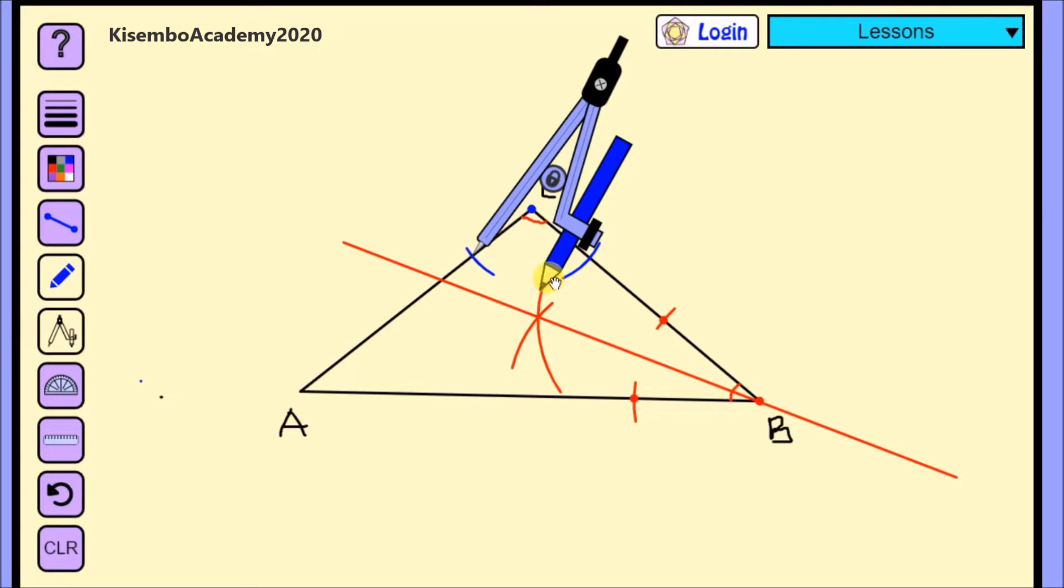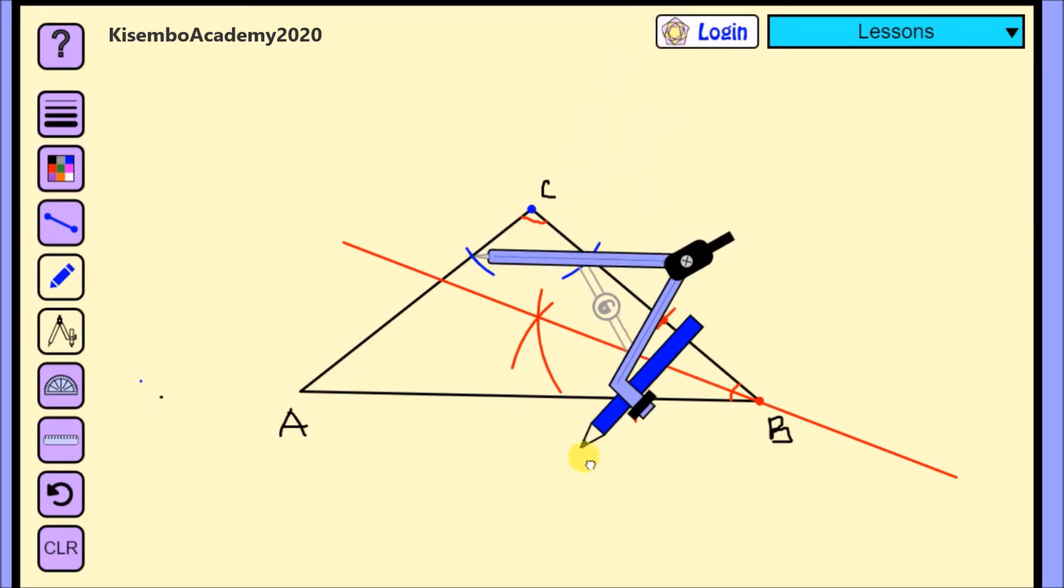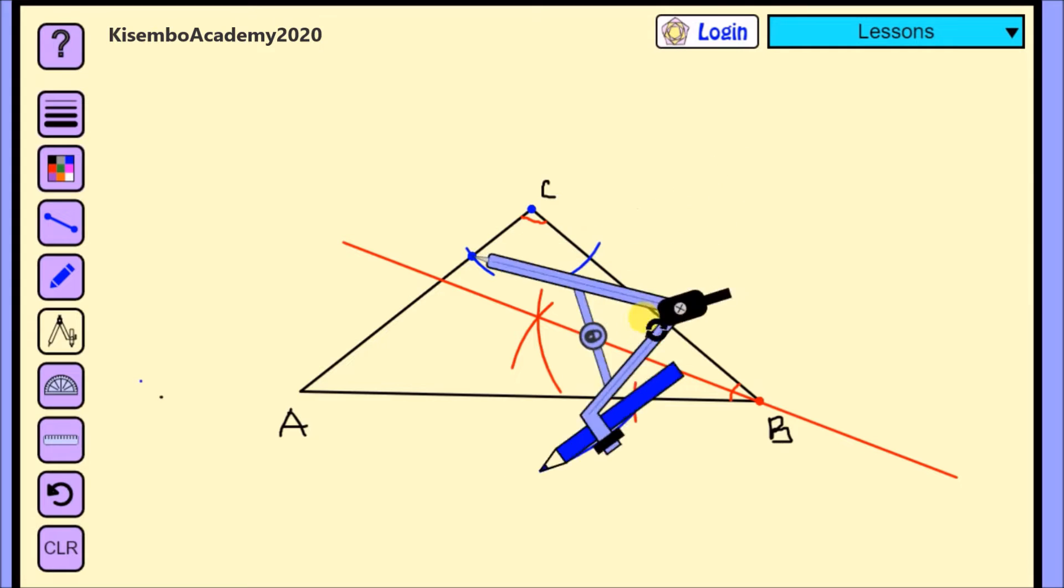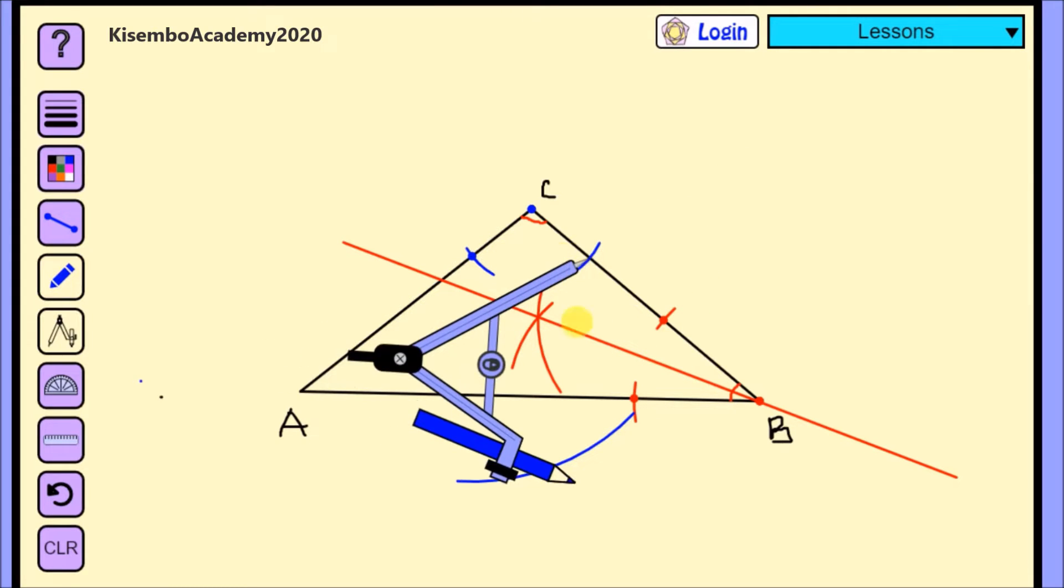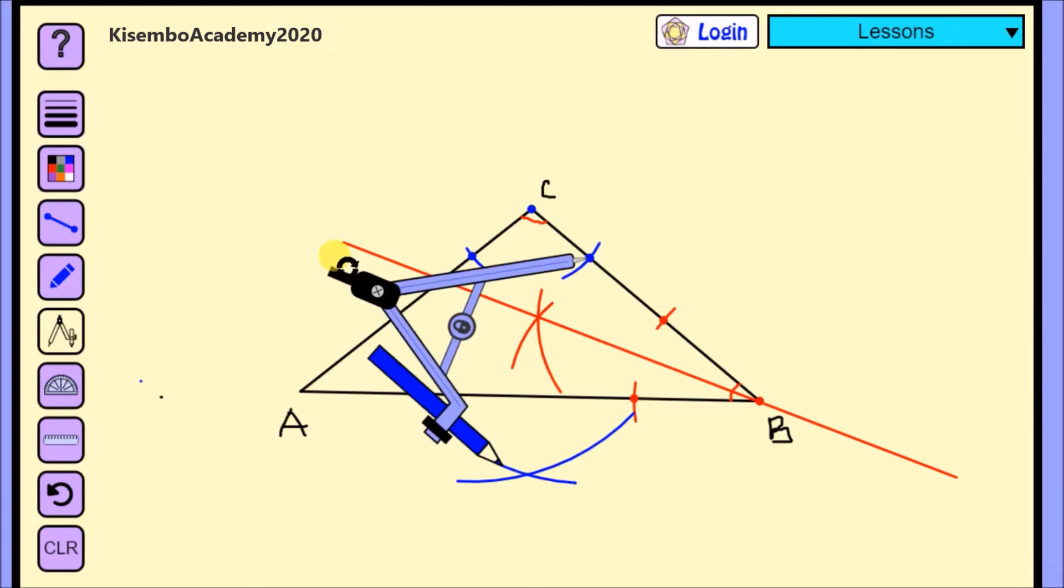After putting it on point C, I draw an arc here and an arc down there. Then, just like I had done before, I draw those two arcs, and then I'll draw the line.